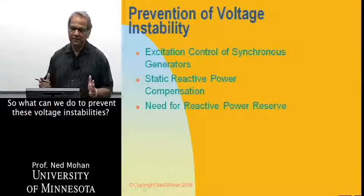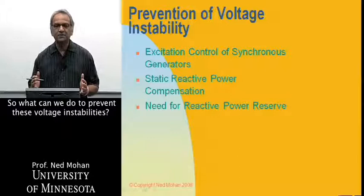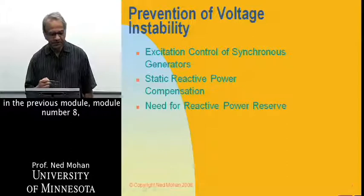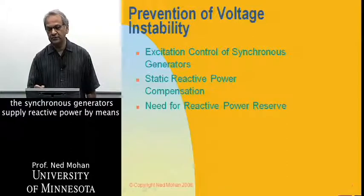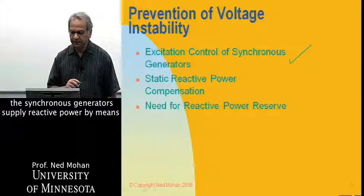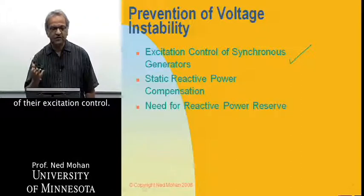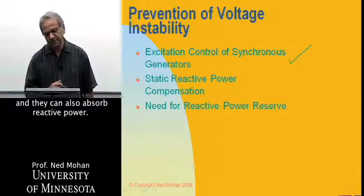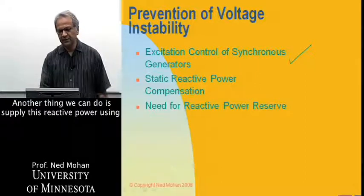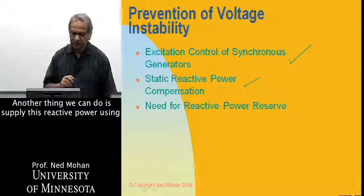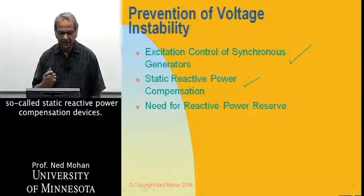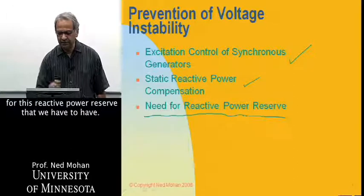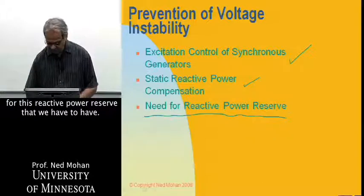So what can we do to prevent these voltage instabilities? One of the things we can do, as we saw in module number eight on synchronous generators, is that synchronous generators supply reactive power by means of their excitation control. They can supply reactive power, and they can also absorb reactive power. The other thing we can do is supply reactive power using static reactive power compensation devices, which shows the need for reactive power reserve.